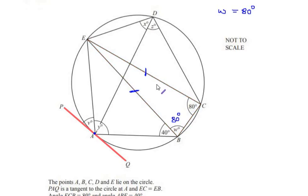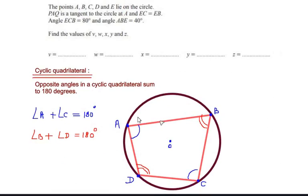Now I will be looking at a cyclic quadrilateral. I can see that ABCD is a cyclic quadrilateral. The theorem states that opposite angles in a cyclic quadrilateral sum to 180 degrees. For example, angle A and angle C are opposite to each other, so their sum is 180 degrees. Similarly, angle B plus angle D, which are opposite angles, they also add up to 180 degrees.